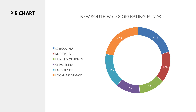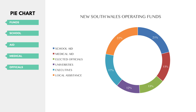I'm going to take: funds, school, aid, medical — and medical is not a noun, I'm just taking that to show you — officials, universities, and assistants. There you go. Once again, medical is not a noun, just to show you it doesn't need to be a noun. And then we're going to read it within the template. What's the target speed? Between 25 to 30 seconds.